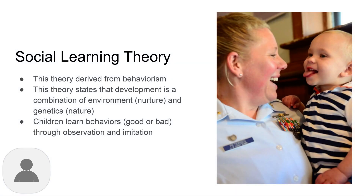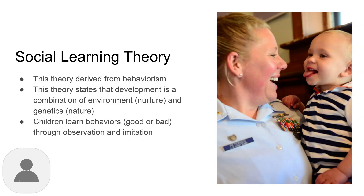Social learning theory bridges behaviorism with more modern understanding by recognizing both environmental and genetic influences. This theory emphasizes how children learn through observation and imitation, suggesting that development occurs through watching and copying others' behaviors.